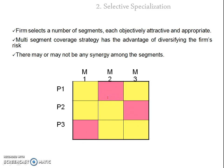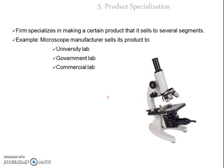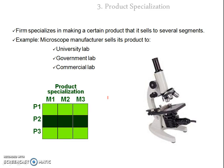The third strategy is product specialization. The company wants to specialize in a particular product — for example, P2 — and manufactures it for all types of customers: M1, M2, and M3. A real-world example is a company manufacturing microscopes as a single product type for all kinds of customers, such as university labs, government labs, and commercial labs. They are specializing in that particular product.